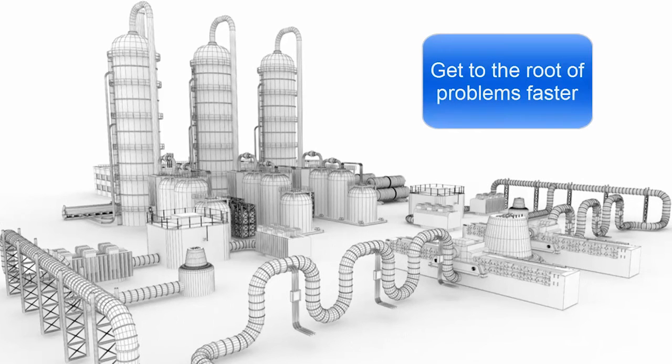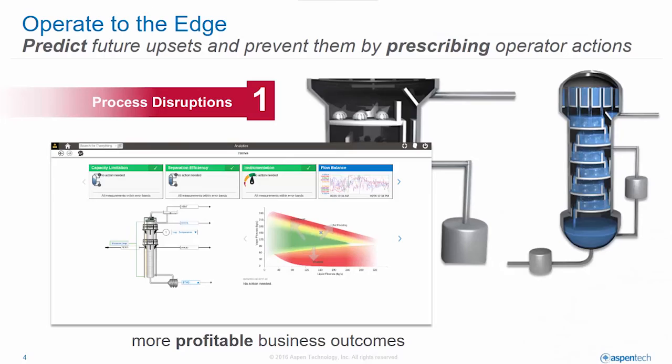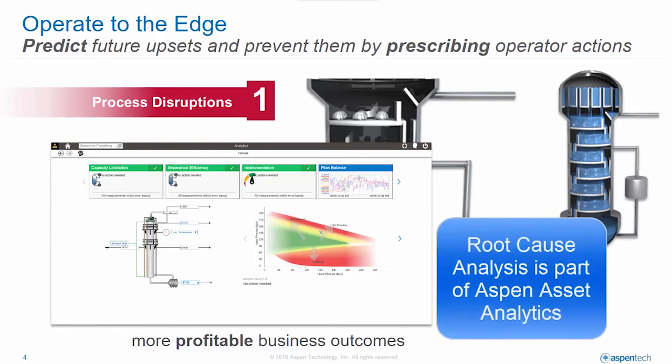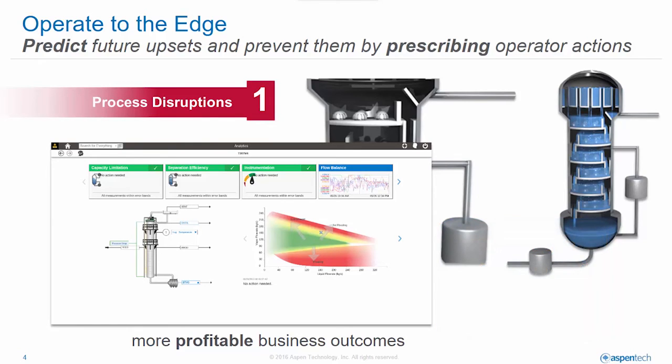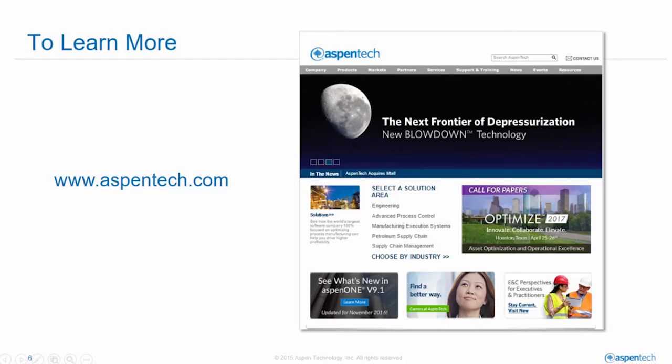RCA is a great tool for determining the source of issues and to understand, in a more quantifiable way, the relationship between the variables. As a part of Aspen Asset Analytics, Root Cause Analysis is one of the technologies available to help you get more from your production assets. To learn more, visit us at www.aspentech.com